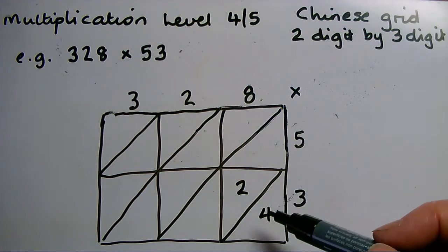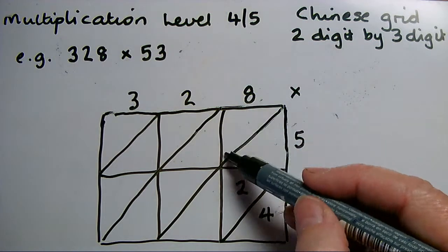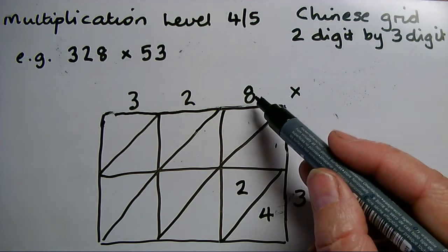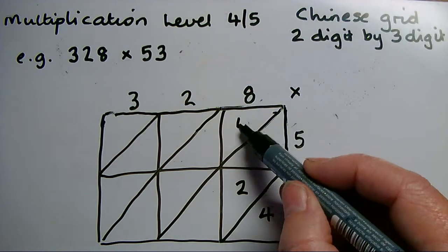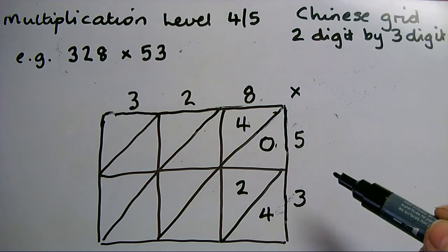5 times 8 in this box here: 5 times 8 will be 40. That's 4 tens go in the top, no units, so I put that there.